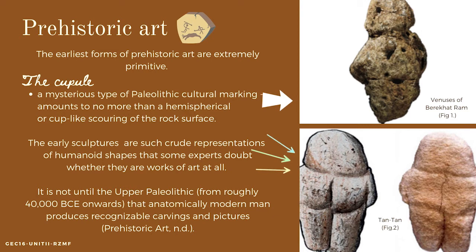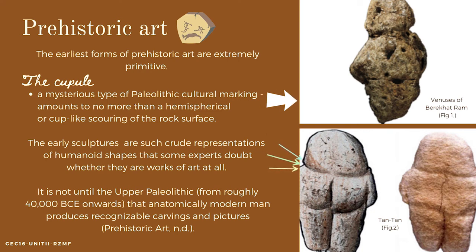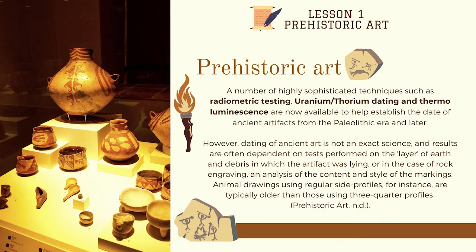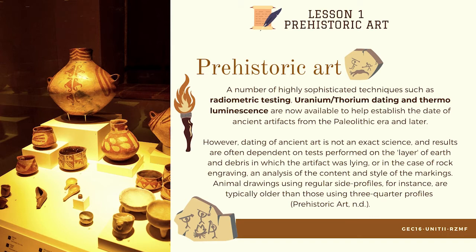It is not until the Upper Paleolithic, from roughly 40,000 BCE onwards, that anatomically modern man produces recognizable carvings and pictures. A number of highly sophisticated techniques such as radiometric testing, uranium/thorium dating, and thermoluminescence are now available to help establish the date of ancient artifacts. However, dating of ancient art is not an exact science, and results are often dependent on tests performed on the layer of earth and debris in which the artifact was lying, or in the case of rock engraving, an analysis of the content and style of the markings.